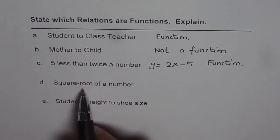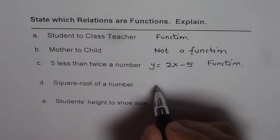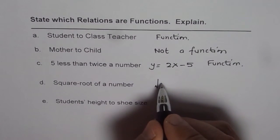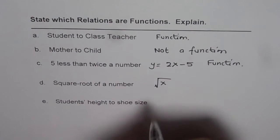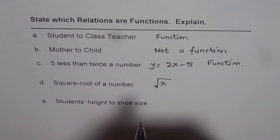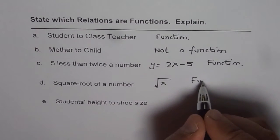Then we have square root of a number. If you take any number, we can find square root of a number. Let us say the number is x. Square root of a number will be unique. It is always positive and therefore this is also a function.